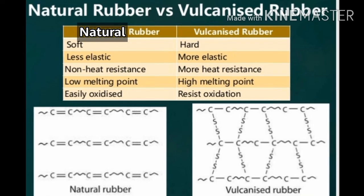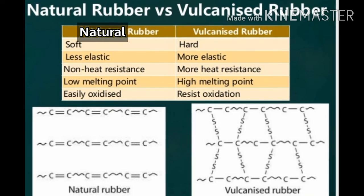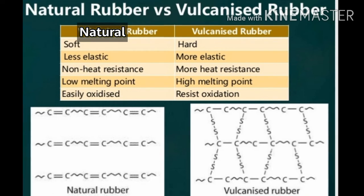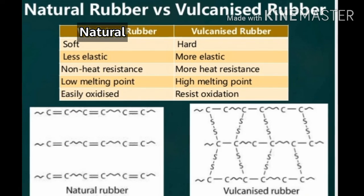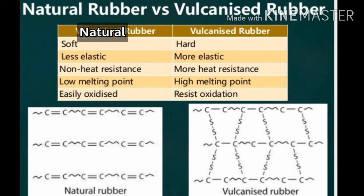Comparing natural rubber and vulcanized rubber: natural rubber is soft while vulcanized rubber is hard. Natural rubber is less elastic but vulcanized rubber is more elastic. Natural rubber is non-heat-resistant while vulcanized rubber is more heat resistant. Natural rubber has a low melting point but vulcanized rubber has a higher melting point. Natural rubber is easily oxidized while vulcanized rubber resists oxidation. Natural rubber has a linear chain structure, while vulcanized rubber has a cross-linked structure.